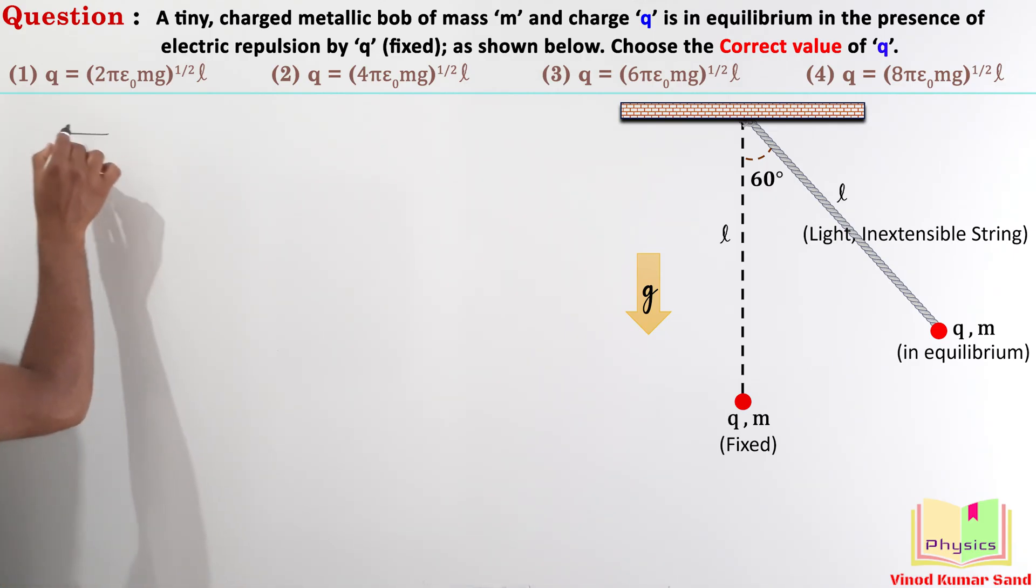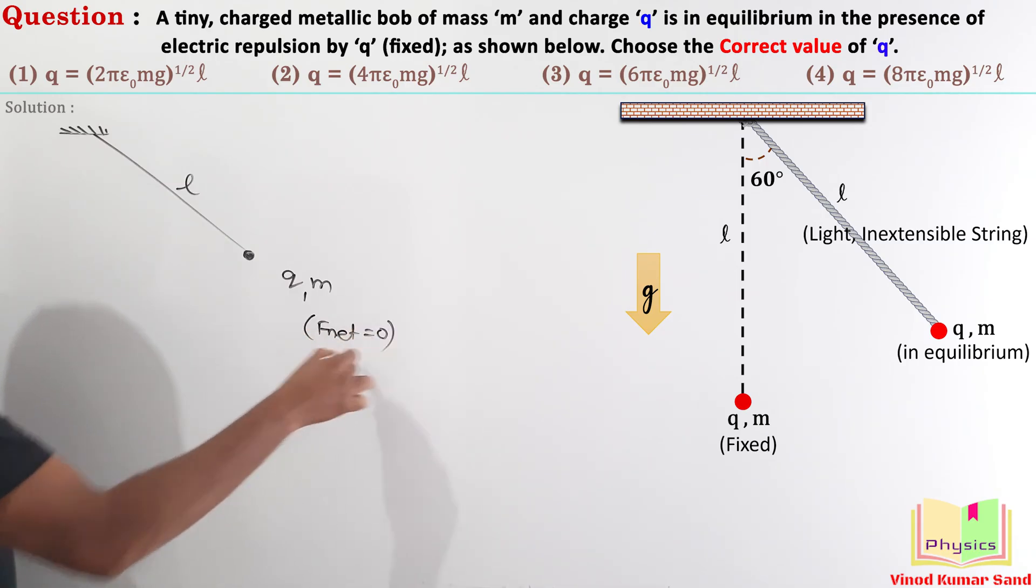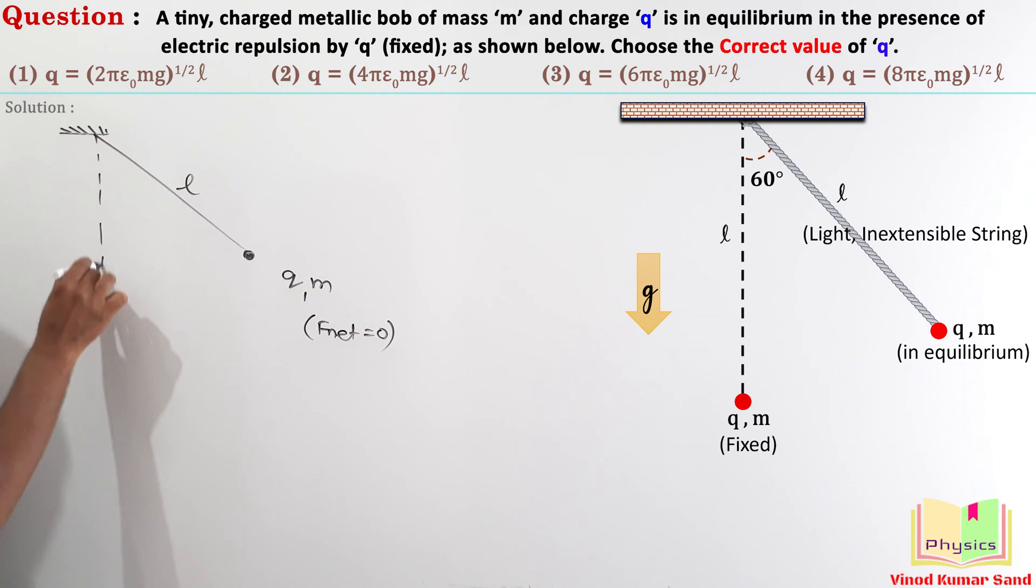Here is the ceiling, there is a light inextensible string having length L. Here is a charged particle having charge Q and mass M and this charged particle is in equilibrium. It means net force on it should be equal to 0. There is another charged particle which is here charge Q mass M again and it is fixed.